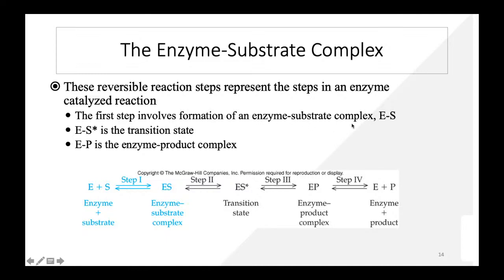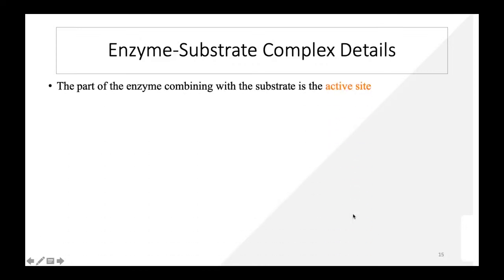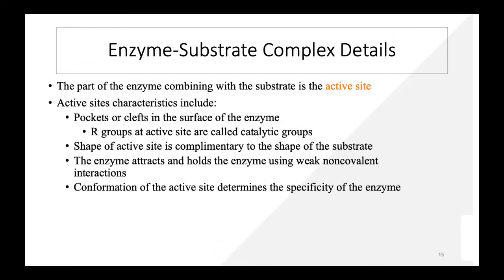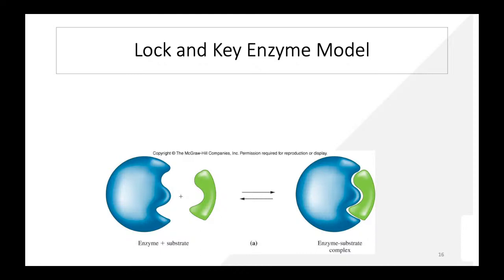The enzyme-substrate complex forms in a stepwise manner: Step 1 — enzyme (E) plus substrate (S) forms enzyme-substrate complex (ES); Step 2 — transition state forms; Step 3 — enzyme-product complex forms; Step 4 — enzyme plus product released. The active site is a pocket or cleft in the enzyme surface. Alkyl groups at the active site are catalytic groups. The shape of the active site is complementary to the substrate, held by non-covalent interactions.